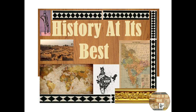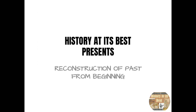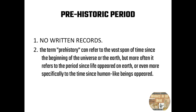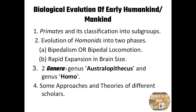Hello friends, welcome to History at its Best. Today, History at its Best presents 'Reconstruction of the Past from the Beginning.' This is a series of videos and our first video is about the biological evolution of early humankind. Let's talk about the prehistoric period. The human species represent the most advanced stage of a long process of evolution which began with the formation of Earth.